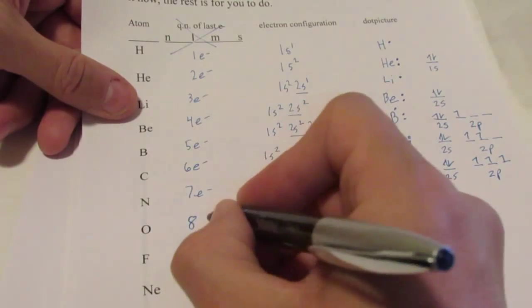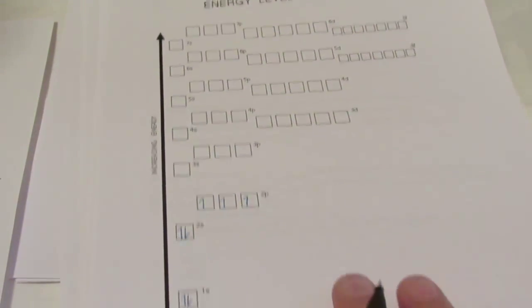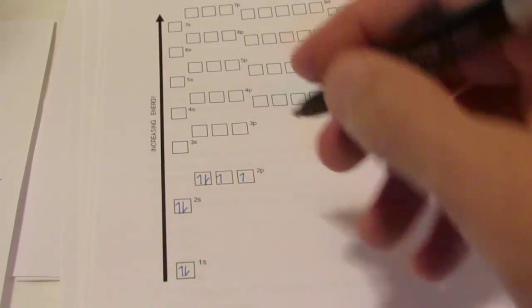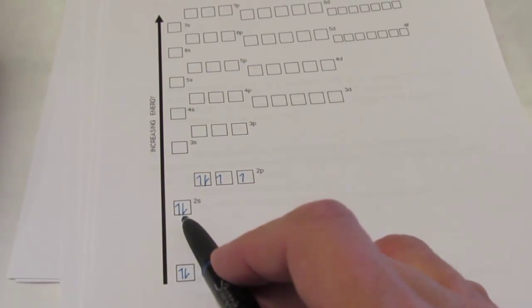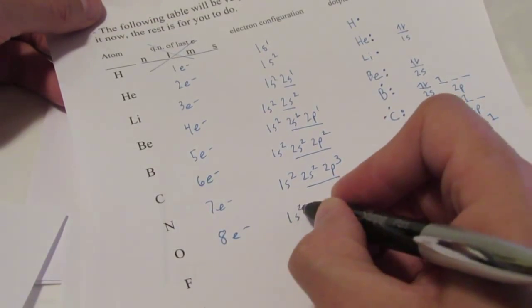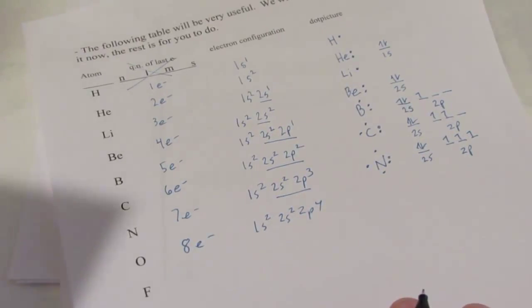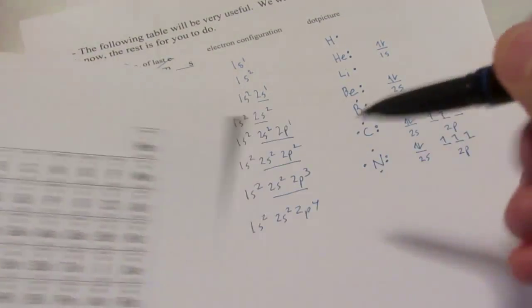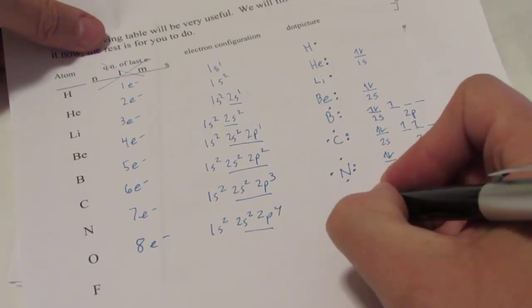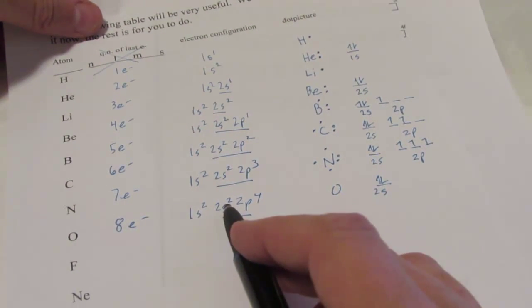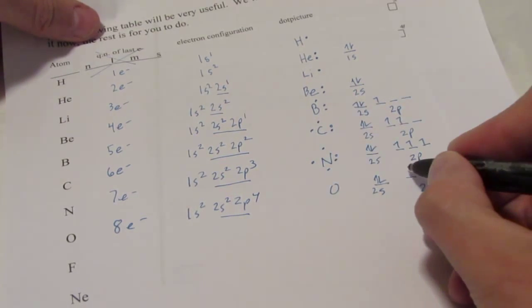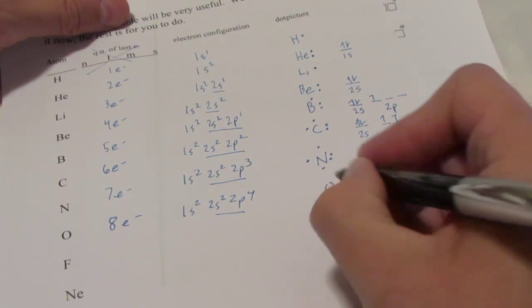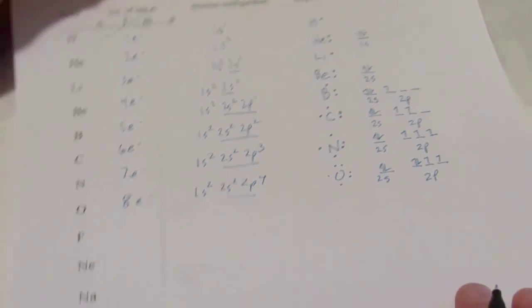Next is oxygen with eight electrons. We know where the first seven go. The eighth has to pair up in 2P. Oxygen's configuration is 1s2, 2s2, 2p4. It's four elements into this section and two rows down. It has six valence electrons — a 2s pair and four electrons in 2p, giving two pairs and two singles in its dot picture.